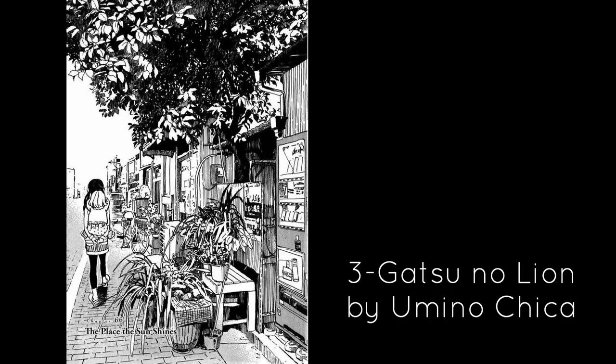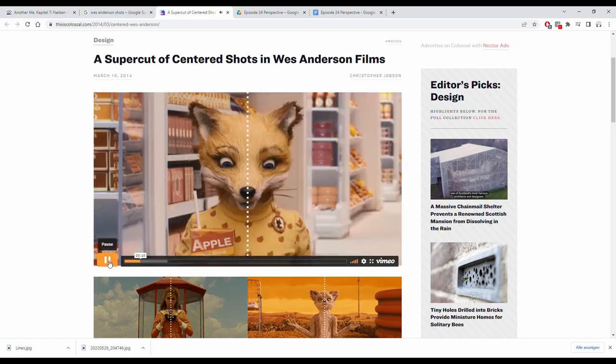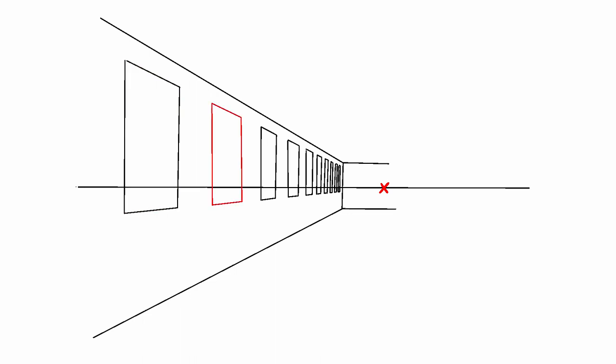The vanishing point doesn't have to be at the center of the picture. Most of the time a panel benefits from having the vanishing point a little further to the right or left, and sometimes it can even be outside of the picture. Unless you're Wes Anderson, most panels benefit from not having one central vanishing point. With this you already create a lot of depth, but objects on the same plane converge the further away they are from the viewer and the closer they are to the vanishing point — so windows get smaller and thinner, and the distance between them converges as well.